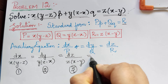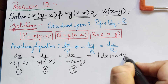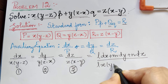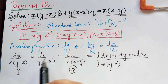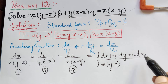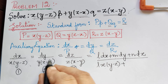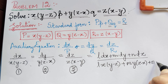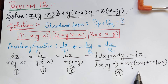By the method of multipliers, these three ratios are also equal to a fourth ratio: (L·dx + M·dy + N·dz) divided by (L·x(y−z) + M·y(z−x) + N·z(x−y)). We multiply L with the first ratio's denominator, M with the second, and N with the third, adding them separately in numerator and denominator. This is the fourth ratio.